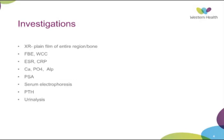Investigations. The basic investigations I would expect for a benign tumour workup are a plain film x-ray, preferably of the entire bone or region such as the joint, and basic bloods looking for inflammatory markers, which can be a soft indication for a tumour process as well as an infective process, which is always a differential. Calcium, phosphate, and alkaline phosphatase are also markers of tumour activity or bone turnover. Prostate-specific antigen, serum electrophoresis, and urinalysis are markers more so for multiple myeloma, always a key differential in the adult age group. And then parathyroid.